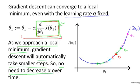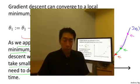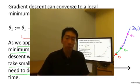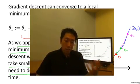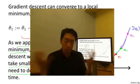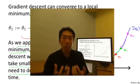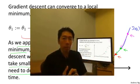So that's the gradient descent algorithm. You can use it to minimize any cost function j, not just the cost function j that we defined for linear regression. In the next video, we're going to take the function j and set that to be exactly linear regression's cost function — the squared cost function we came up with earlier. Taking gradient descent and the squared cost function and putting them together, that will give us our first learning algorithm: the linear regression algorithm.